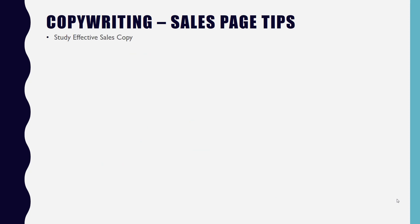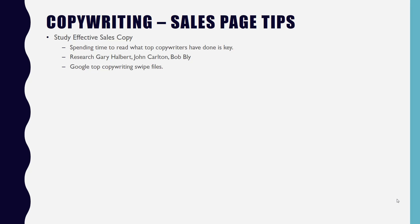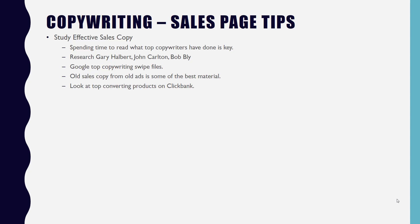Study effective sales copy — spend time on weekends or a little bit each day reading what top copywriters have done. Look for people like Gary Halbert, John Carlton, and Bob Bly. You can also do a Google search for 'top copywriting swipe files' and get ideas from classic newspaper and magazine ads, which are some of the best material for high-quality copywriting. Also look at the top converting products on ClickBank in a particular category to see what works.